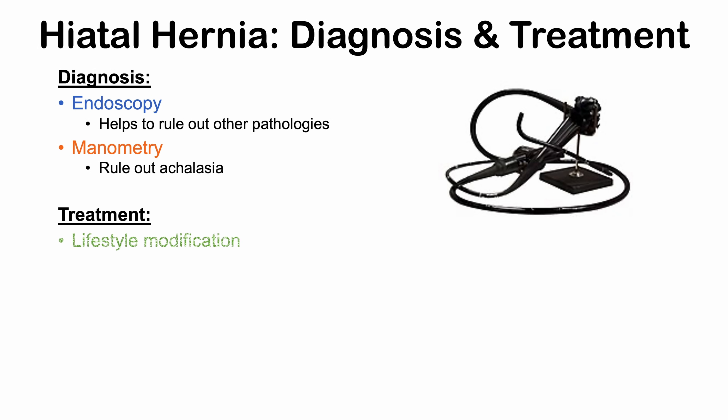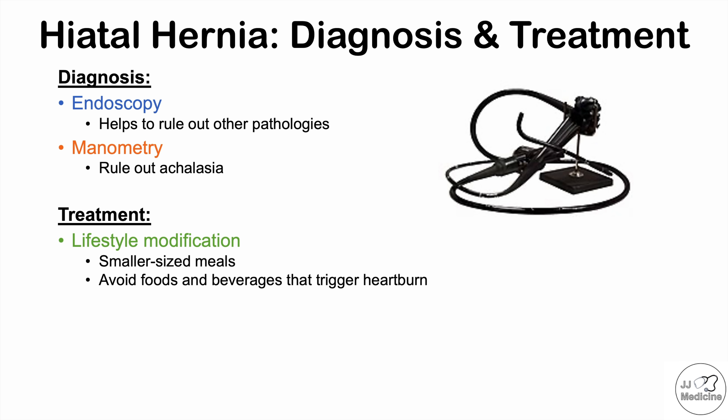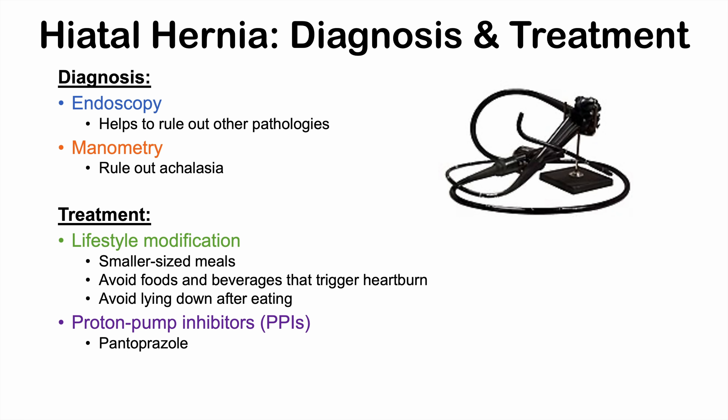For treatment, lifestyle modification is important. Instead of a few larger meals, it's better to have several smaller meals to prevent overfilling of the stomach and reduce reflux and regurgitation. It's also important to avoid foods and beverages that trigger heartburn — those that relax the lower esophageal sphincter or increase gastric acidity. Avoiding lying down after eating is also recommended, as gravity can allow acidic gastric contents to reflux more easily. For medications, proton pump inhibitors, or PPIs, such as pantoprazole, help reduce stomach acidity and GERD symptoms.